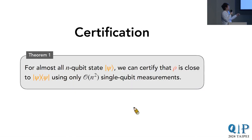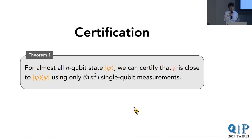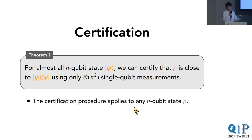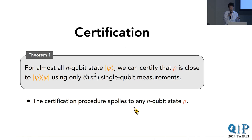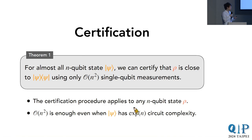The first theorem is the following: we proved that for almost all n-qubit states psi in the entire Hilbert space, we can certify if some state rho is close to psi or not by performing only order n-squared single-qubit measurements. This theorem holds for any state rho—the state created in the lab can be anything, whether highly entangled coherent errors, incoherent errors, or adversarial errors. Furthermore, this theorem holds even when psi has exponentially high circuit complexity, like a hard random state, and we only need order n-squared single-qubit measurements.